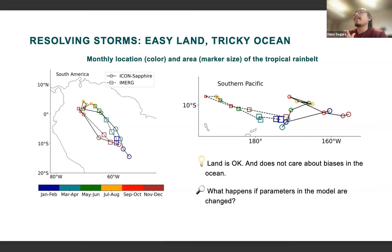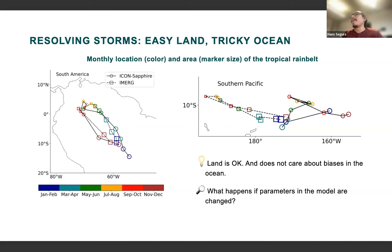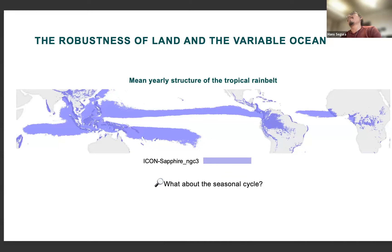This result tells us that when we start to resolve convective storms, we are able to capture the coupling that exists between the land and the atmosphere, and this coupling seems robust to what happens over the ocean. To test this hypothesis, we ran a new version of the simulation with improved physics — a modified cloud microphysics scheme, modified radiation, and a new ocean module — to see whether the land result holds and whether the ocean changes.